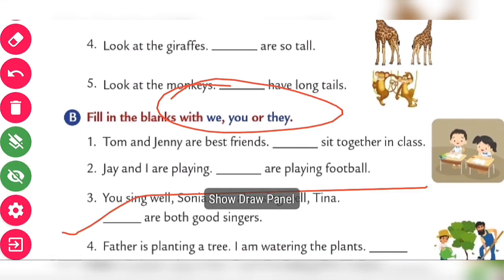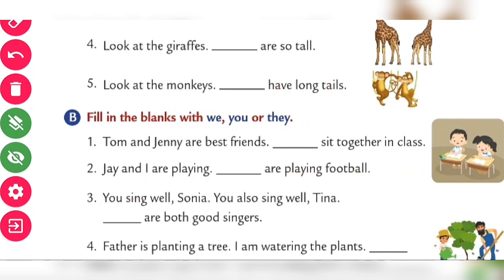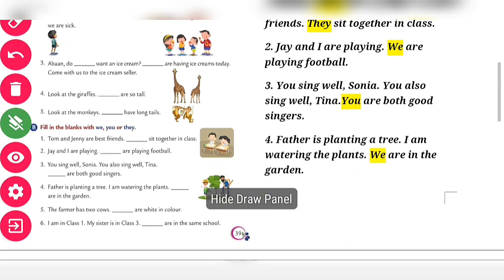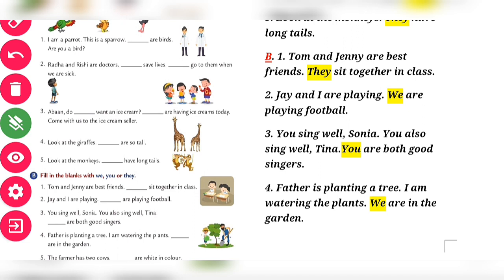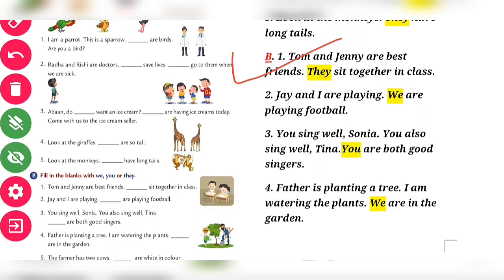Exercise B: Fill in the blanks with 'you,' 'we,' and 'they.' Number one: Tom and Jenny are best friends, 'They sit together.' Number two: J and I are playing — 'We are playing football.' Number three: 'We sit well' — 'You sing well, Sania, you also sing well Tina, you are both good singers.'